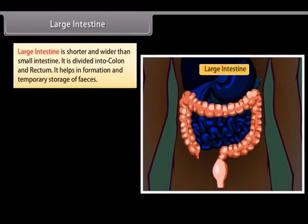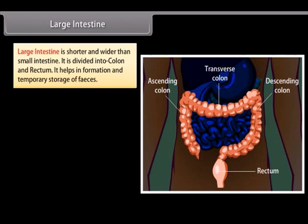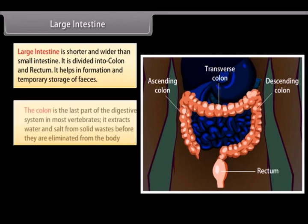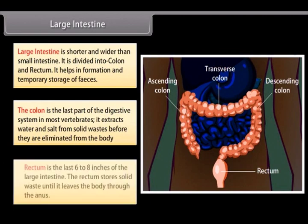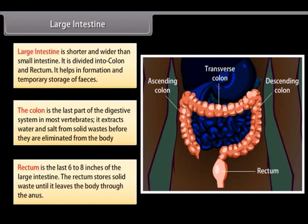The large intestine is shorter and wider than the small intestine. It is divided into colon and rectum. It helps in the formation and temporary storage of feces. The colon is the last part of the digestive system in most vertebrates and extracts water and salt from solid wastes before they are eliminated from the body. The rectum is the last 6 to 8 inches of the large intestine and stores solid waste until it leaves the body through the anus.